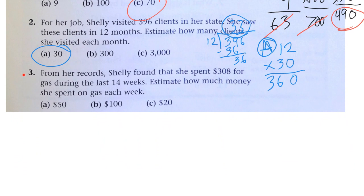Number three, from her records, Shelly found that she spent $308 for gas during the last 14 weeks. Estimate how much money she spent on gas each week.